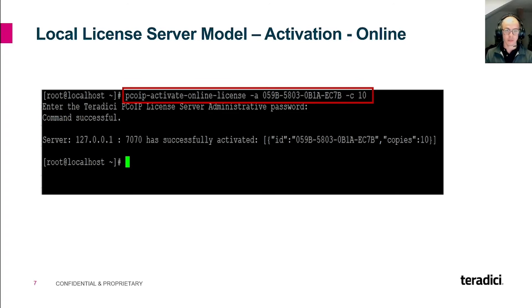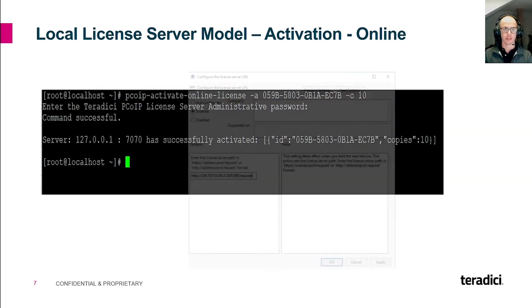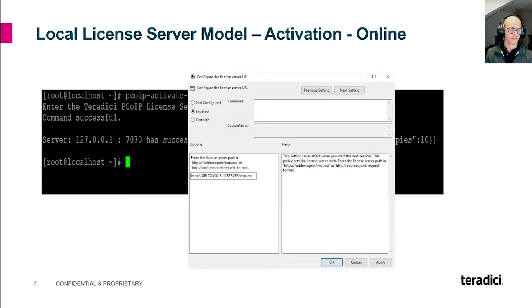You can, for example, have two local license servers installed and have five licenses activated on each of them. Once you run the command, you will also be prompted to enter your license server administrator password to authenticate. Once the license is activated, you have to tell the CAS agent on your workstation — either via GPO or via the pcoopagent.conf file — the URL of your local license server.